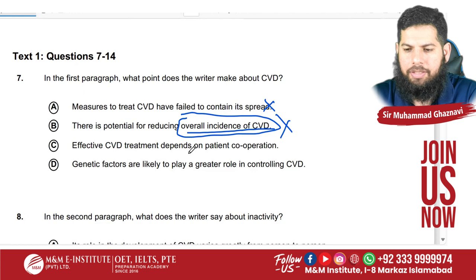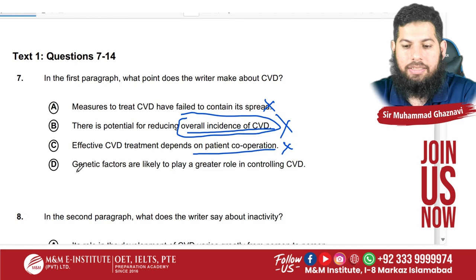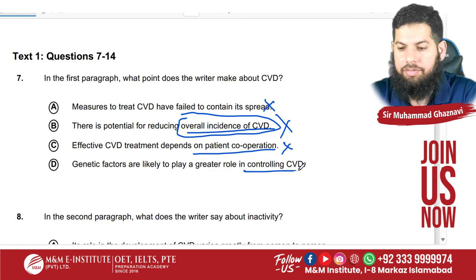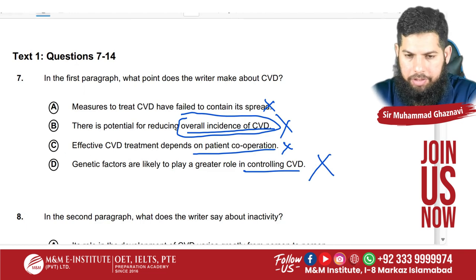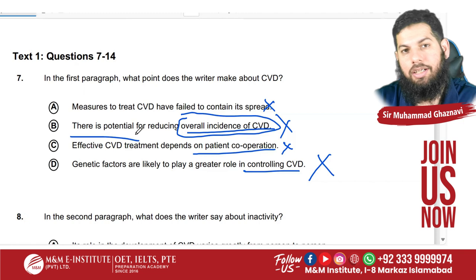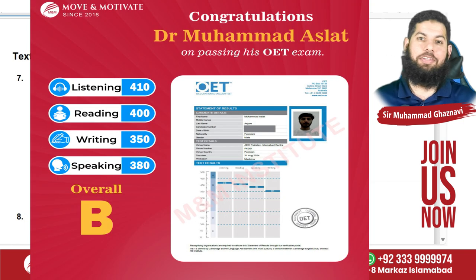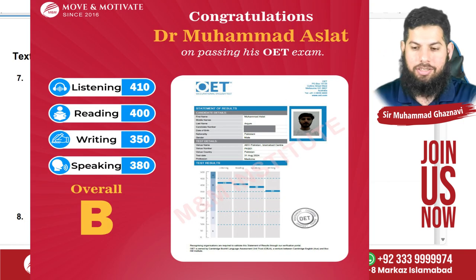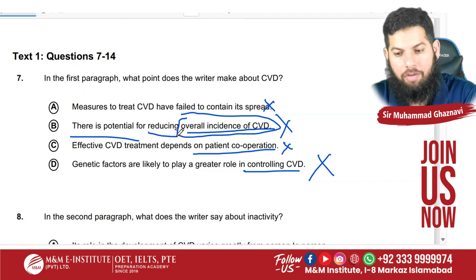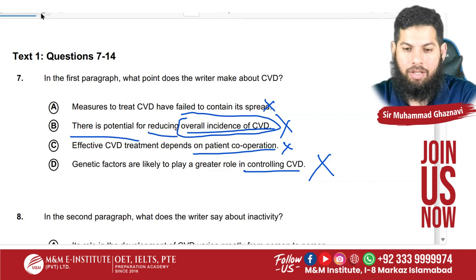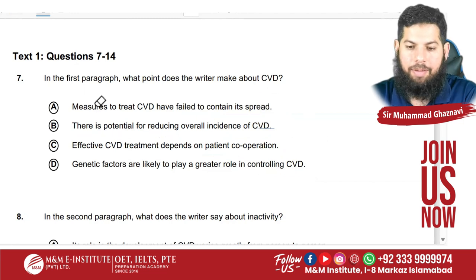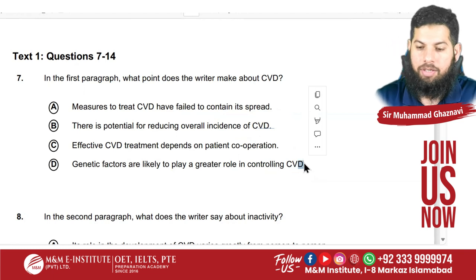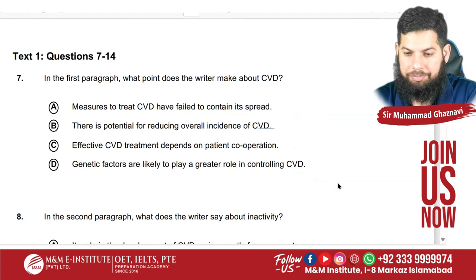So we have only option B left. You can see how we select B as the answer. Inside the paragraph, everything was related to increase, and option B mentions reduction of overall incidence — which is quite surprising and challenging. How can we solve this? We go to the paragraph again. By negating all three other options, we were not able to directly select B as the right answer, so we go back.